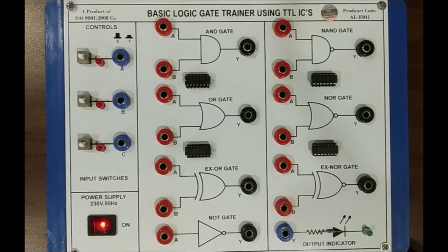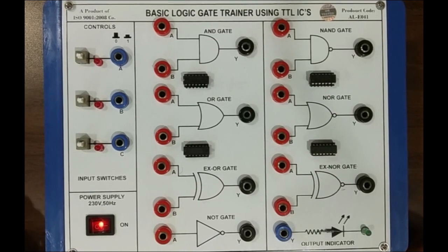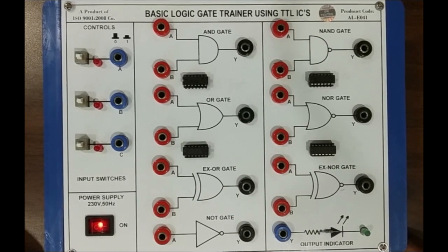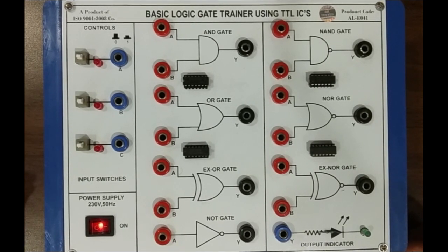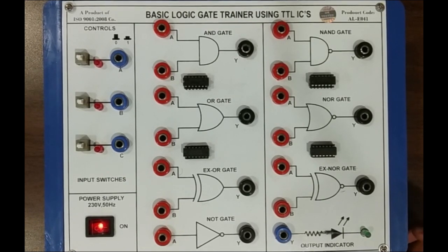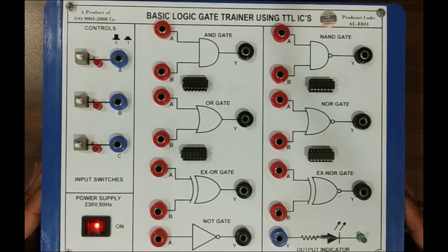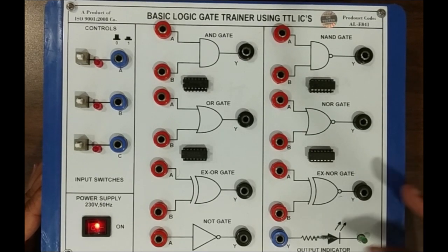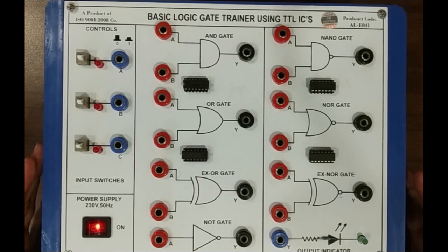Hello everyone. In digital electronics, we will study today one experiment to simulate all the basic gates. In the last lecture we studied AND gate, OR gate, and NOT gate, which is also known as inverter gate. Today we will simulate all three gates in our trainer kit. You can see here we have our trainer kit. We have a number of gates already installed — a total of seven gates — but the basic gates are three.